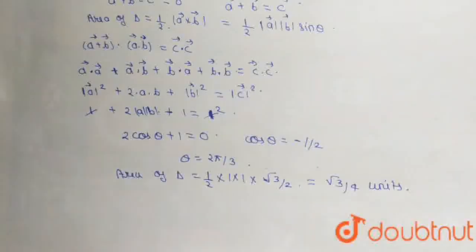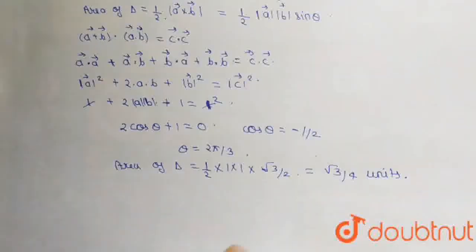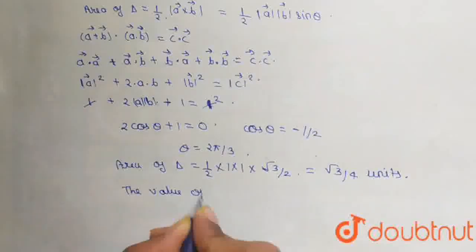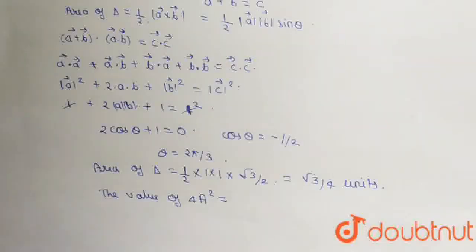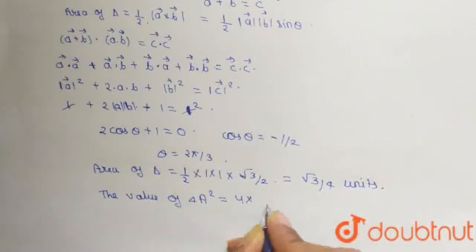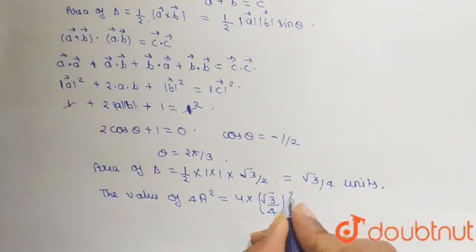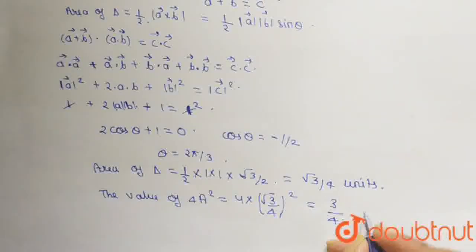This is our area A. Now what we have to find is the value of 4A square. The value of 4A square will be equal to 4 cross (root 3 by 4) whole squared. When we solve this, we get our answer which is equal to 3 by 4 units. So this will be the value of 4A square.